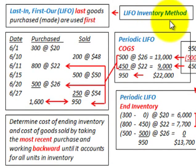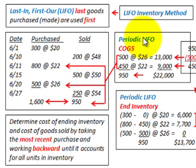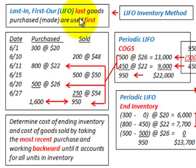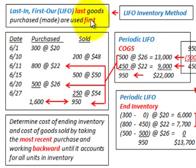Here we're going to be looking at the LIFO inventory method. We're going to compare the periodic LIFO inventory method with the perpetual LIFO inventory method, going through a numerical example to show the difference. LIFO is classified as last in, first out — the last goods purchased or made are used first.